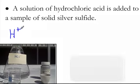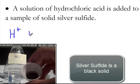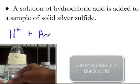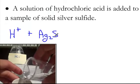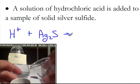And it's going to be added to a sample of solid silver sulfide. And silver sulfide is Ag2S. And that's going to be a black solid because silver has tarnished.